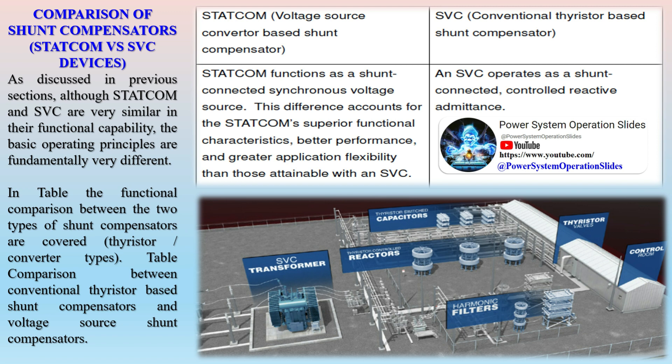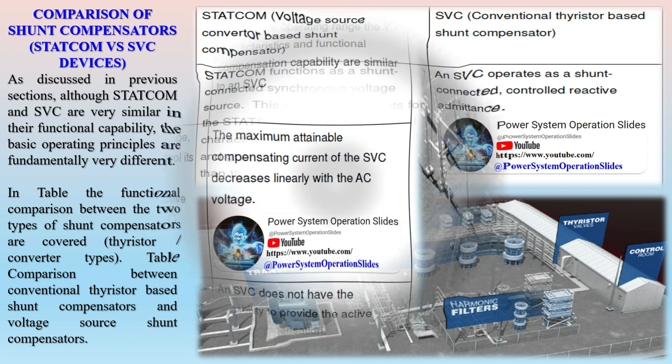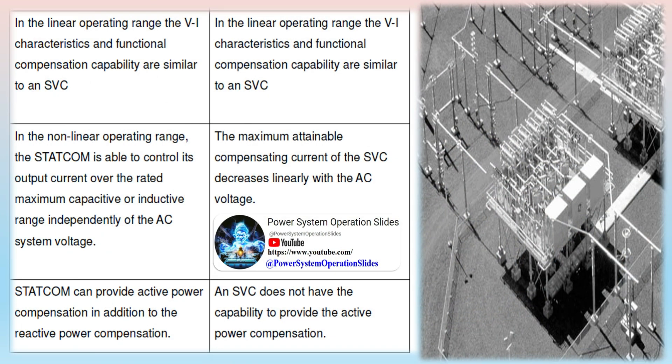While FACTS devices offer significant benefits for the power grid, their implementation presents certain operational challenges. Regarding protection systems, traditional distance protection relays used to detect and isolate faults on transmission lines can malfunction due to the rapid and dynamic changes in power flow caused by FACTS devices. New protection schemes and relay settings need to be developed to ensure accurate fault detection and isolation while considering the presence of FACTS devices in the grid.